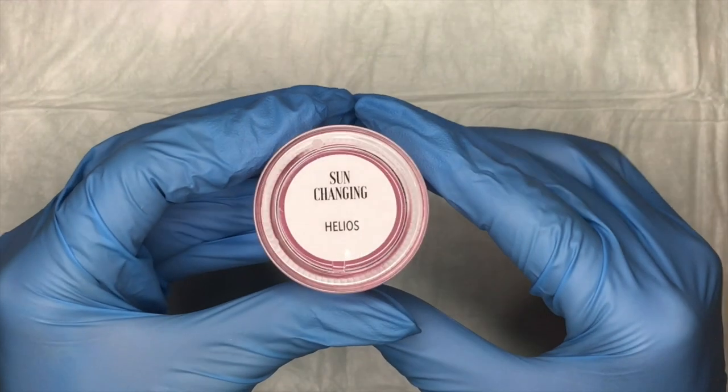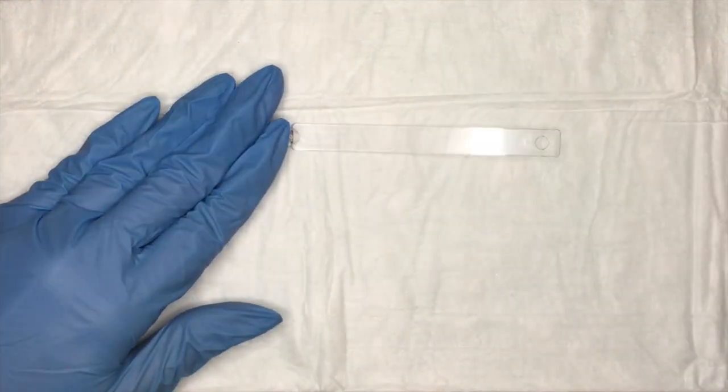So here I'm just showing the color that I chose to do today as an example for the swatch. It's called Helios from Rebel Nail and it is a sun changer.